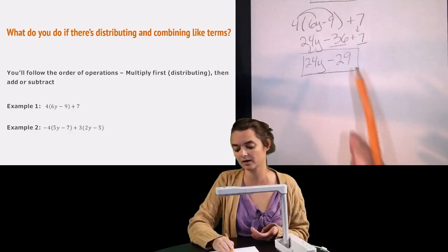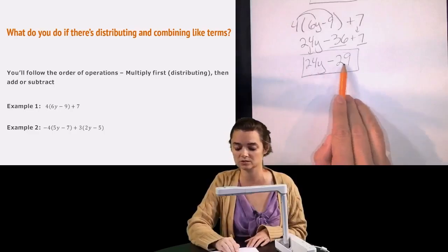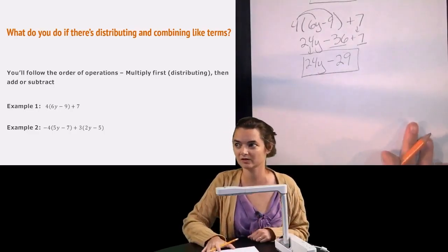And that's as simple as I can get it. I can't combine the 24y and the 29 because they're not alike. That would be like having 24 yo-yos and subtracting $29. Like they're just different from one another.